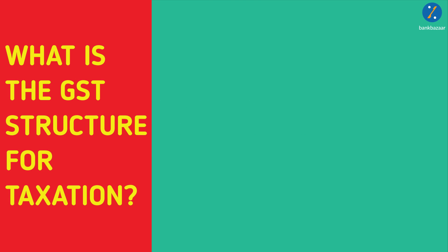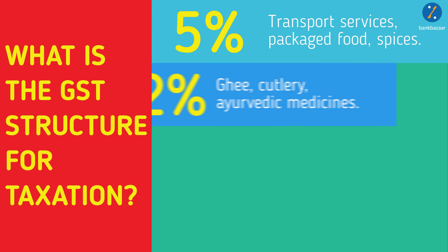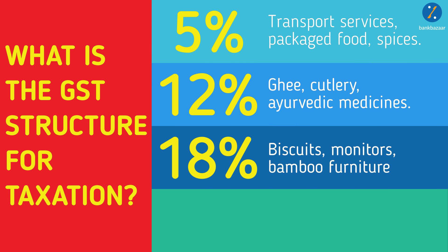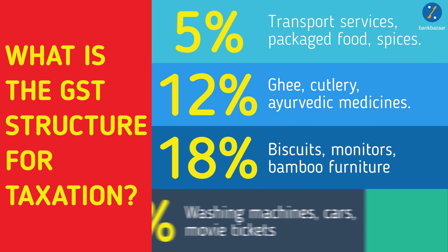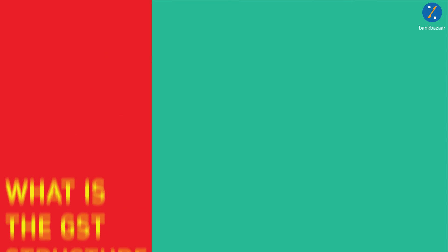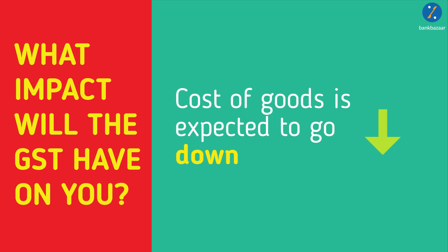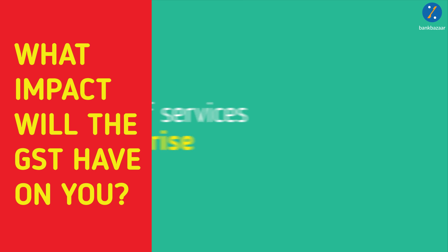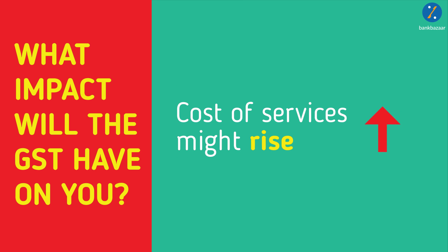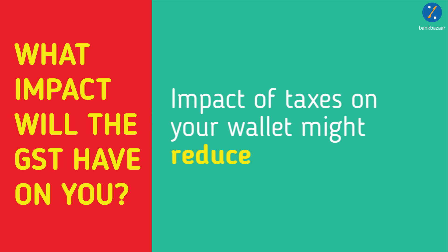These tiers are 5%, 12%, 18%, and 28%. What impact will GST have on you? Well, the cost of goods is expected to go down, while the cost of services might rise. But don't worry — the overall impact of taxes on your wallet is likely to reduce.